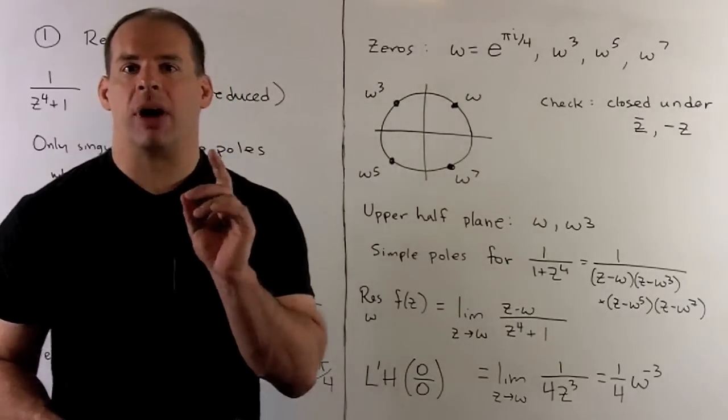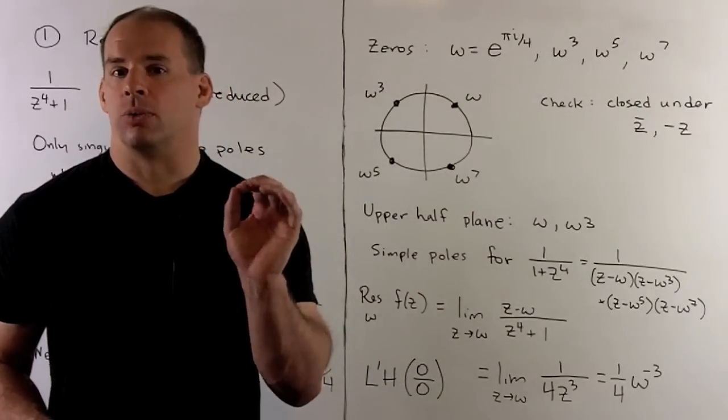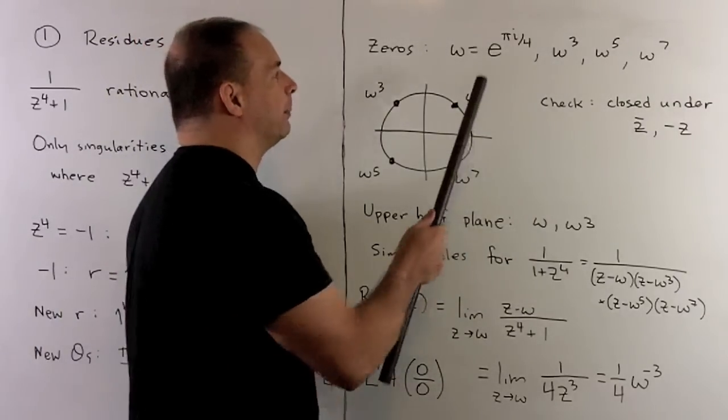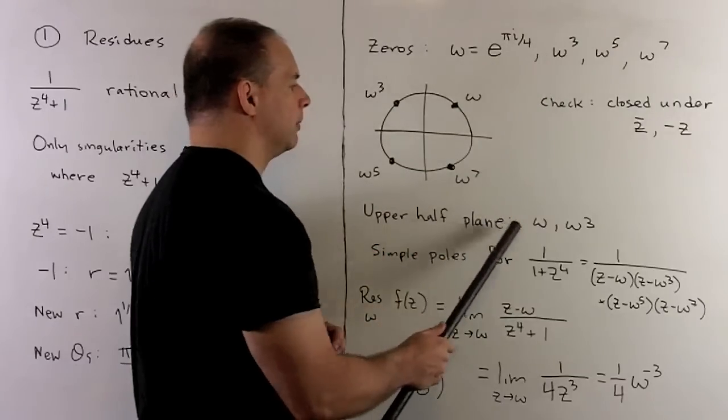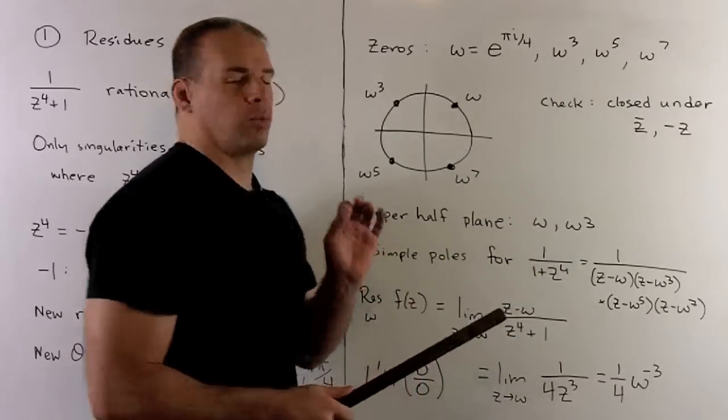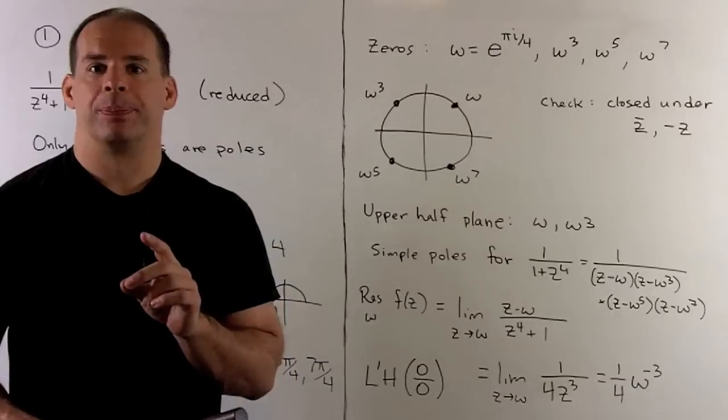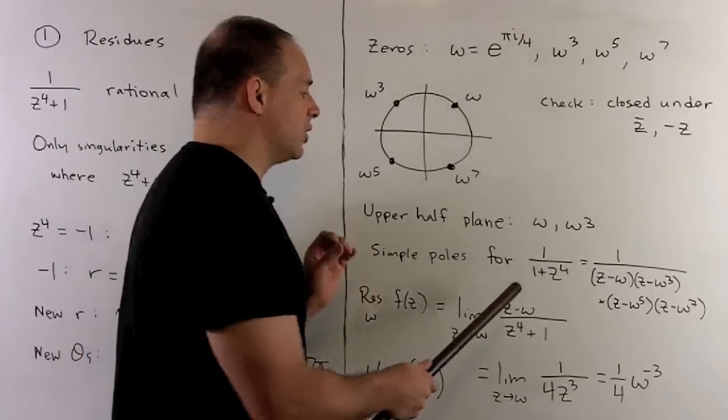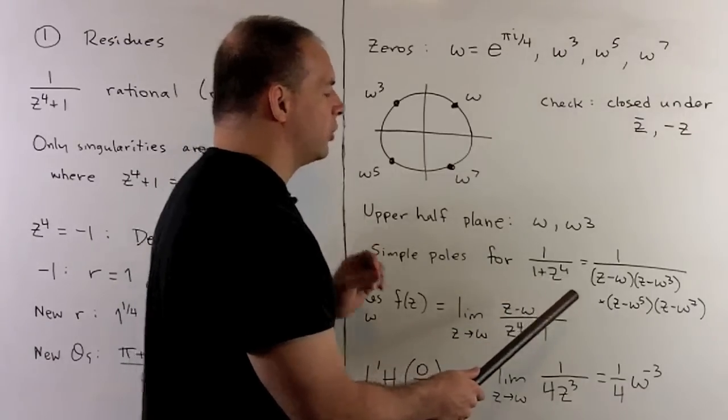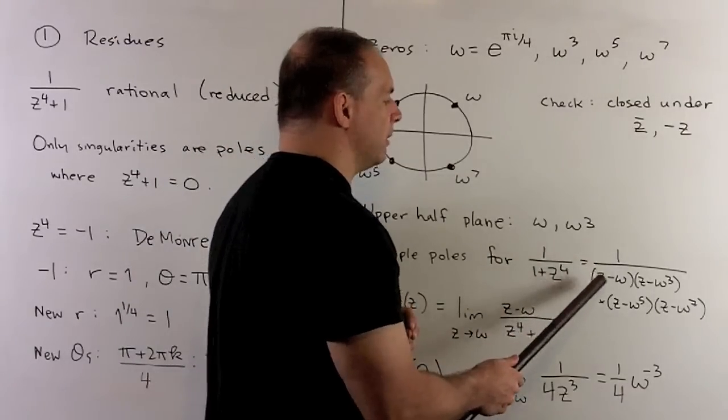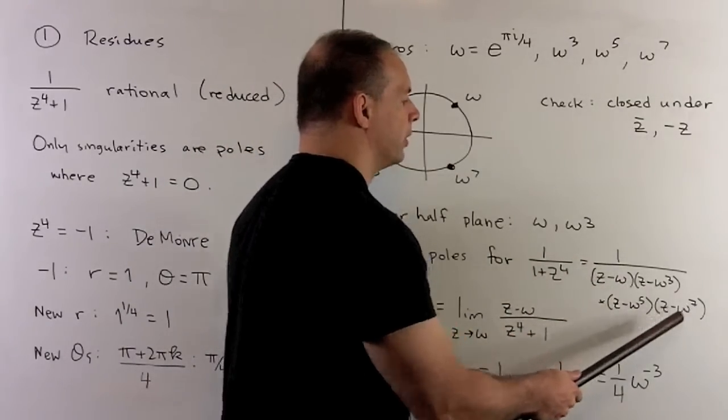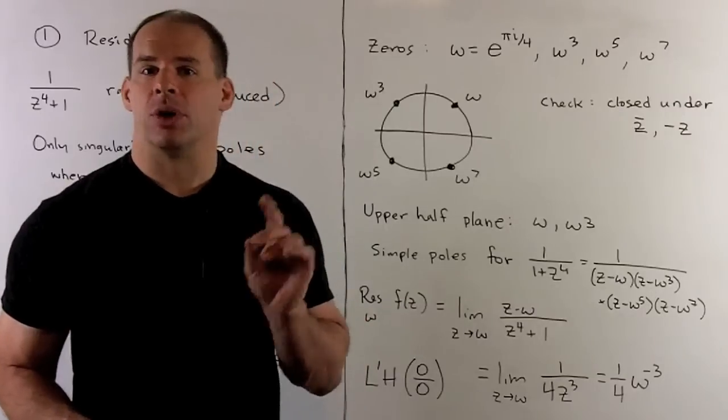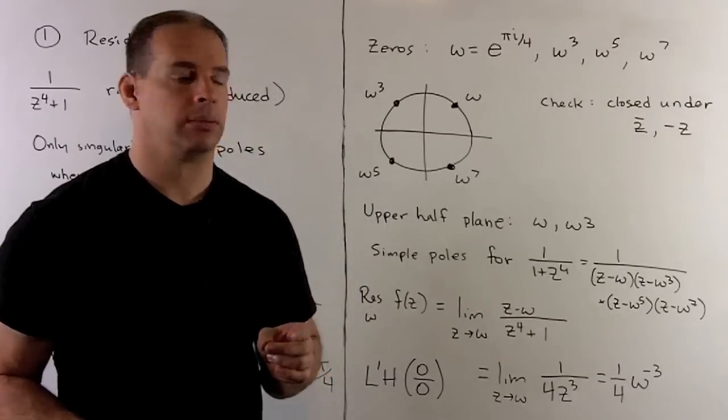Now, we're only interested in the upper half plane. The roots that are going to occur there are going to be omega and omega cubed. So, I want to compute residues at those points. These poles are going to be simple poles, so the idea is we could just factor this out. Then, you'll note, when we factor, we have 1 over z minus each of our roots. So, all the exponents are 1, so the poles are simple.